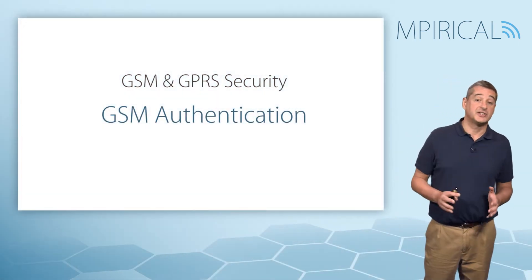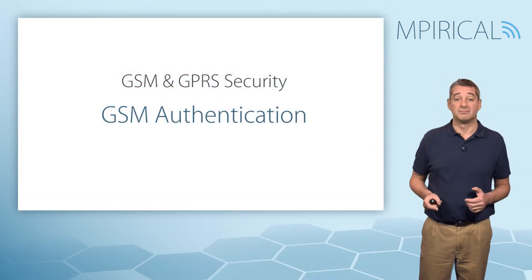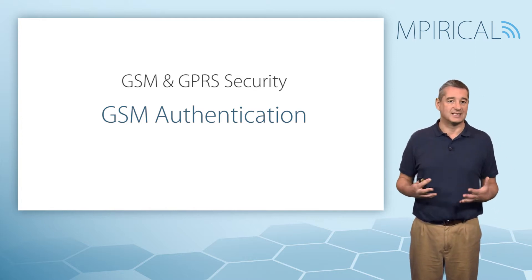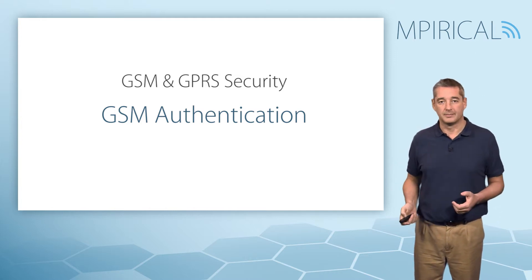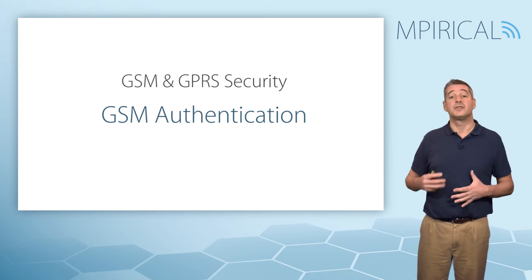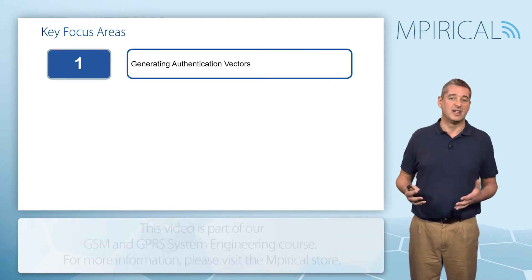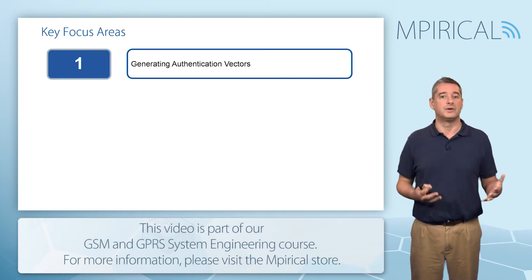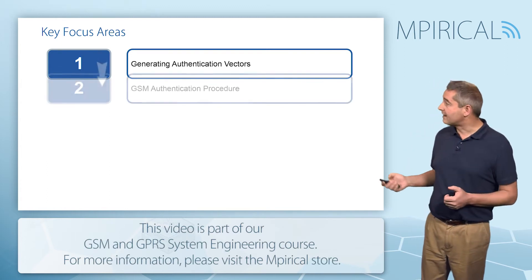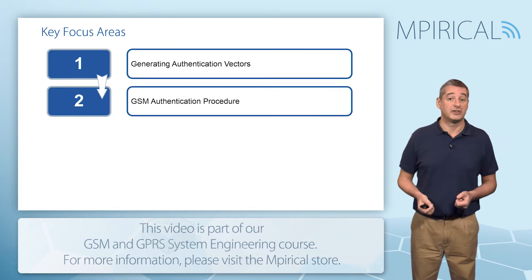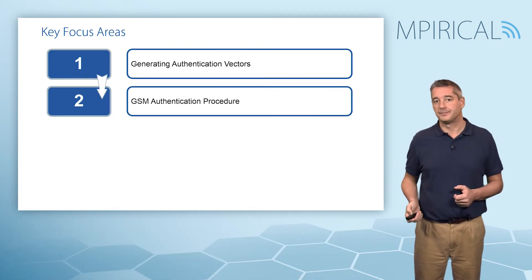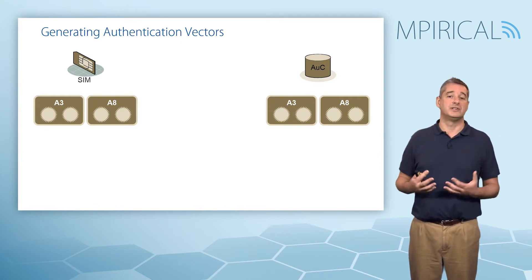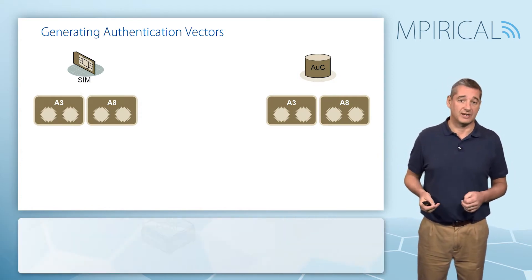In this session we're going to turn our attention to GSM authentication — in other words, how we ensure only legitimate mobiles get access to the network. In doing so, we're going to deal with the term authentication vectors. These are security parameters, so we're going to see how these are generated and moved around the network, then look at the GSM authentication procedure in more detail.